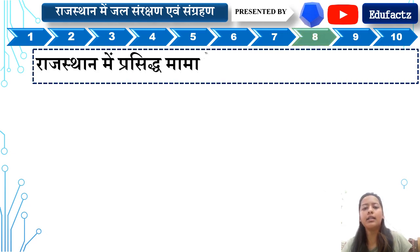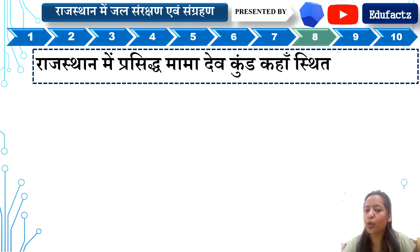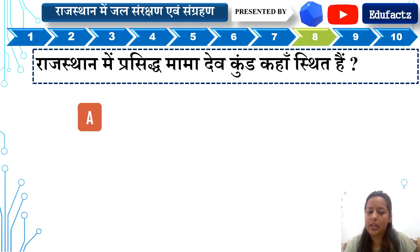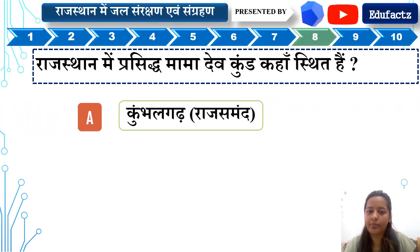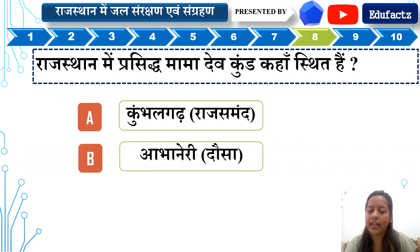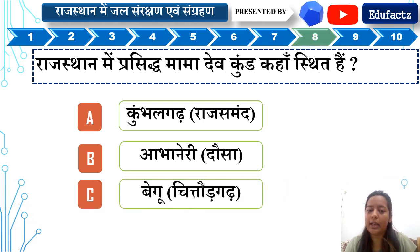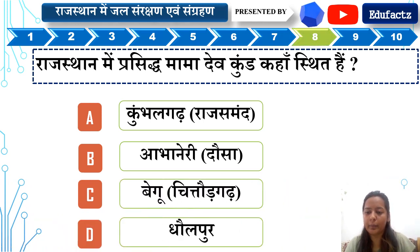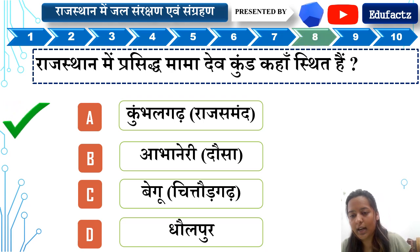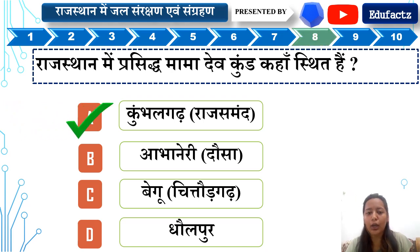Question 8: Rajasthan mein prasiddh Maamadev Kund kahan sthit hai? A — Kumbhalgarh, Rajasamand, B — Abhaneri, Dhosa, C — Begu, Chittorgarh, D — Dholpur. Iska right answer is Option A — Kumbhalgarh, Rajasamand.